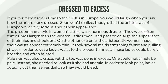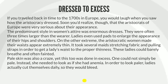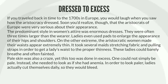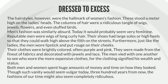Ladies even used pads to enlarge the appearance of their hips and shoulders. On the other extreme, the aristocratic women made their waists appear extremely thin. It took several maids stretching fabric and pulling straps in order to get a lady's waist to the proper thinness. These ladies could barely breathe and often fainted. Pale skin was also a craze, yet this too was done in excess. One could not simply be pale; instead, she needed to look as if she had anemia. In order to look paler, ladies actually cut themselves daily so they would bleed.